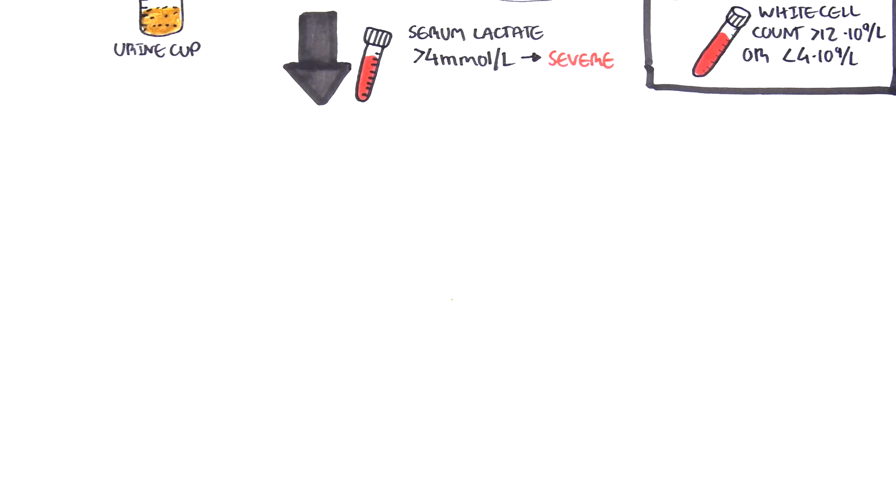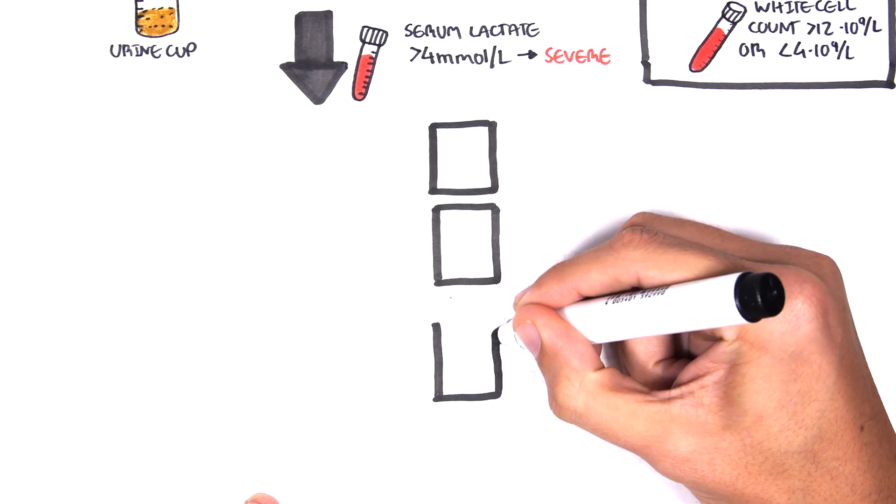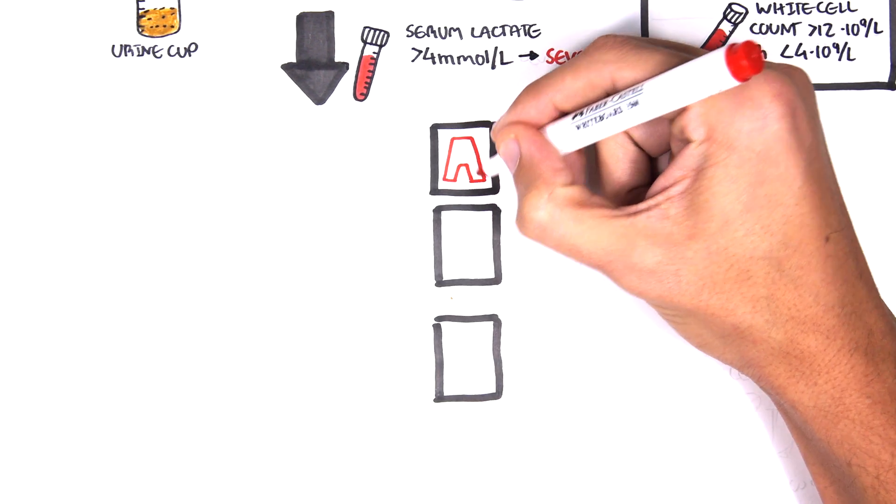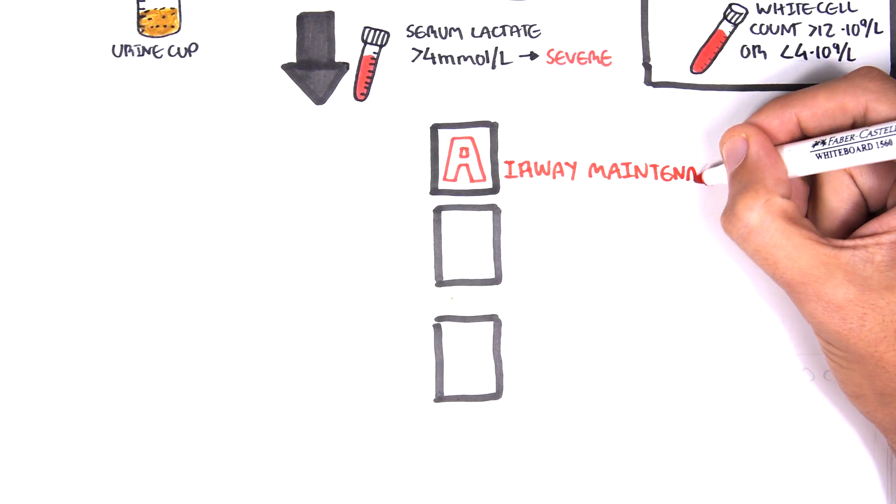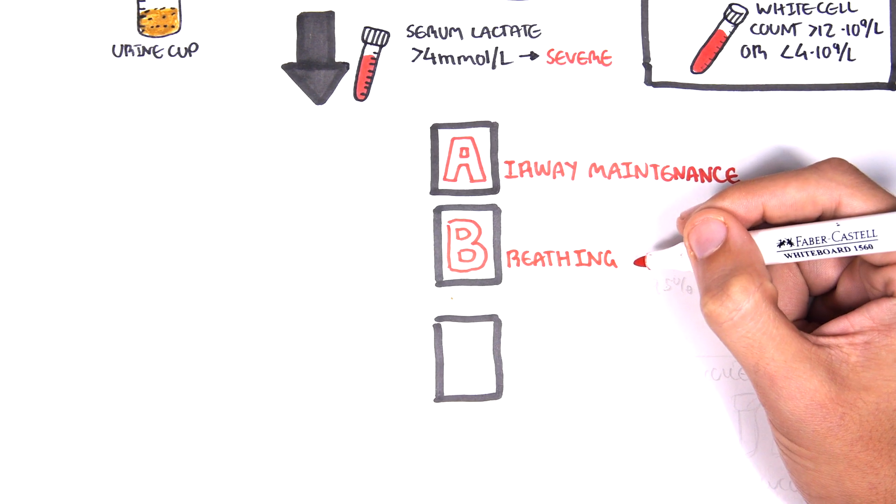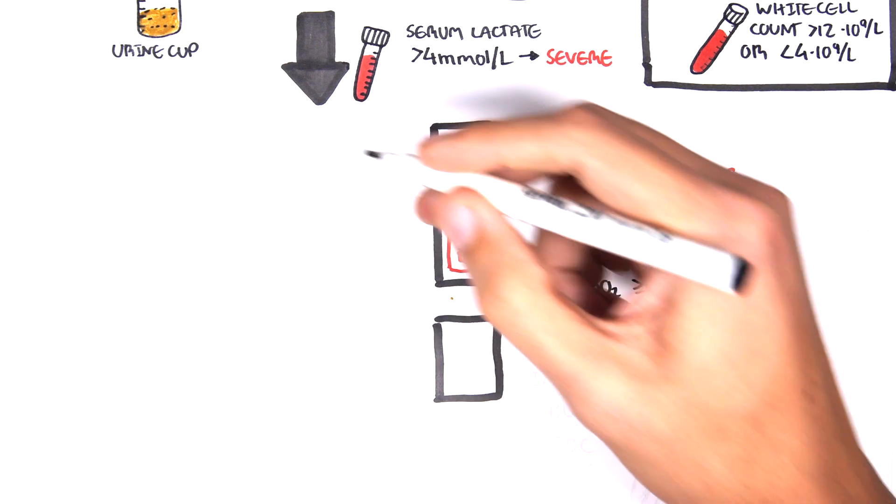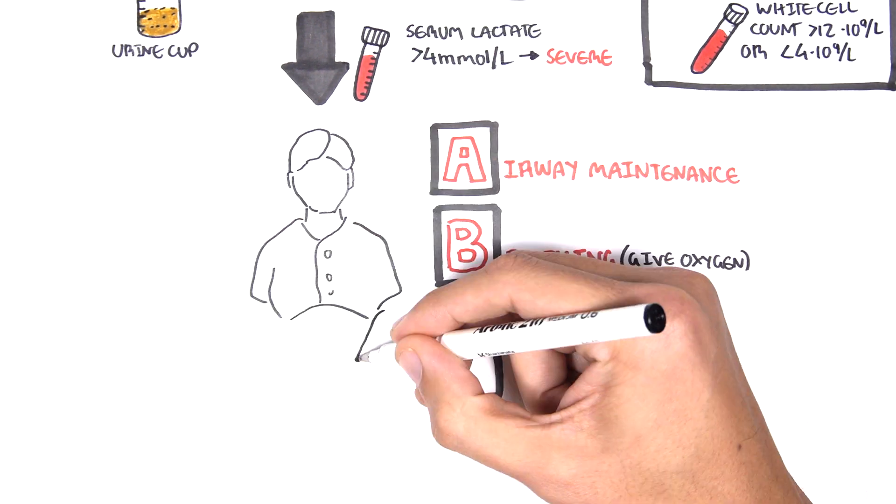If sepsis is suspected, basic doctors A, B, C, D is performed. A looks at the patient's airways, check for patency. B is for breathing, give oxygen and aim for an oxygen saturation of 95% or greater.